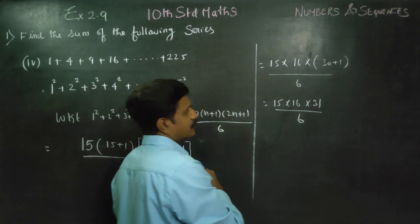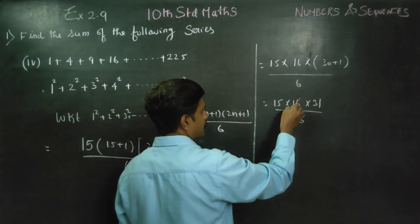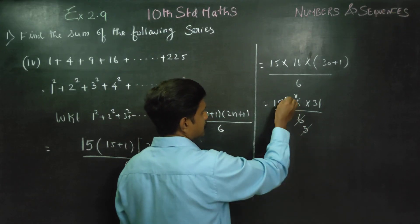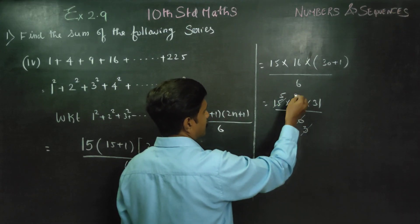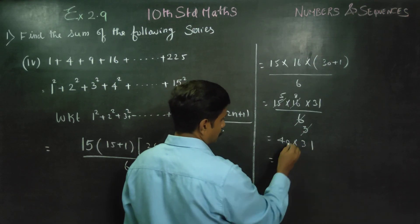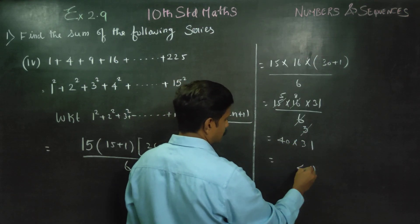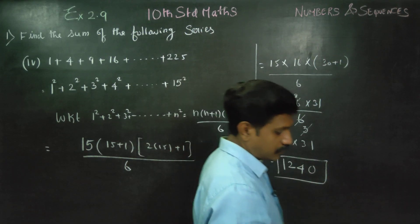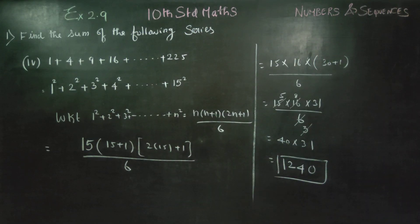2 tables cancel, 3 tables cancel. 5 times 8 is 40 into 31. 4 times 1 is 4, 4 times 3 is 12. Therefore your answer will be 1240. This is your exact answer. Thank you.